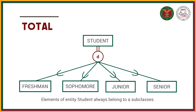Since it is also disjoint, every student must belong to exactly one subclass. That is total specialization. On the other hand, we have partial specialization: some entity of the superclass may not belong to any subclass, denoted by a single line from the superclass.